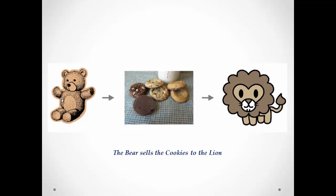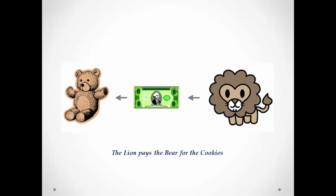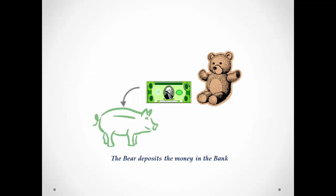The bear now sells the lion the cookies. As we expect, the lion then pays the bear for the cookies, and the bear deposits the money in the bank.